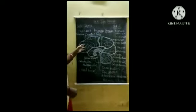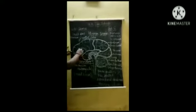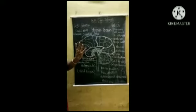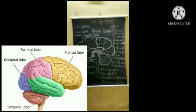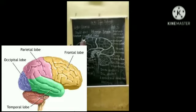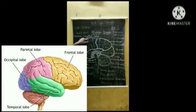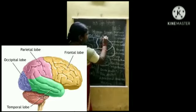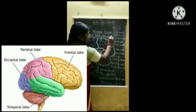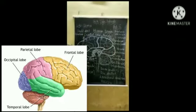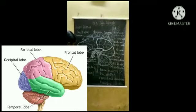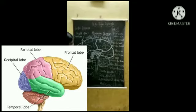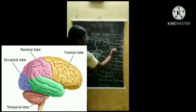In the cerebrum there are four lobes. The first lobe is called the frontal lobe — situated in the front. The next lobe is known as the parietal lobe, P-A-R-I-E-T-A-L. The third lobe is called the temporal lobe. And the last one is known as the occipital lobe.